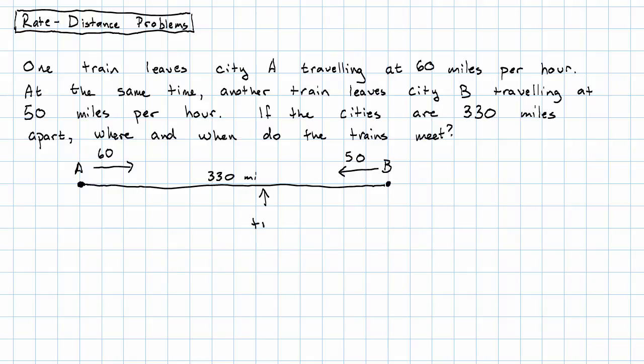Let's let our variables be T, the time it takes, in hours, and D, the distance from City A that they meet. So this distance will be D. Then this distance, it won't be the same distance. It'll be the rest of the 330 miles. This distance will be 330 minus D.